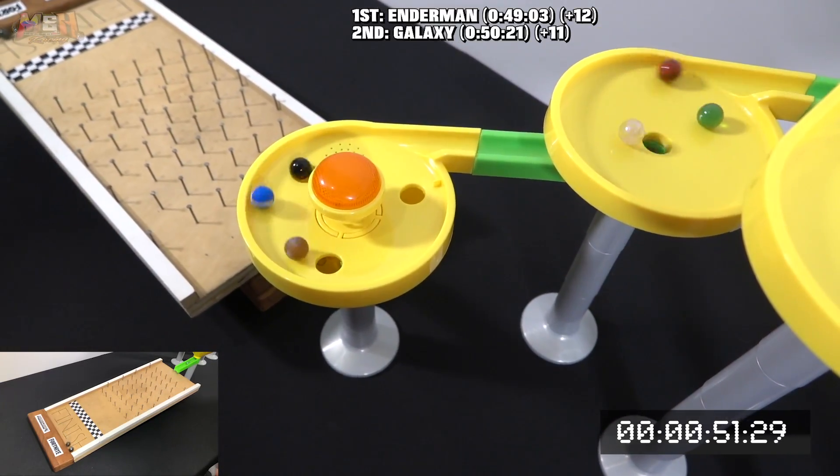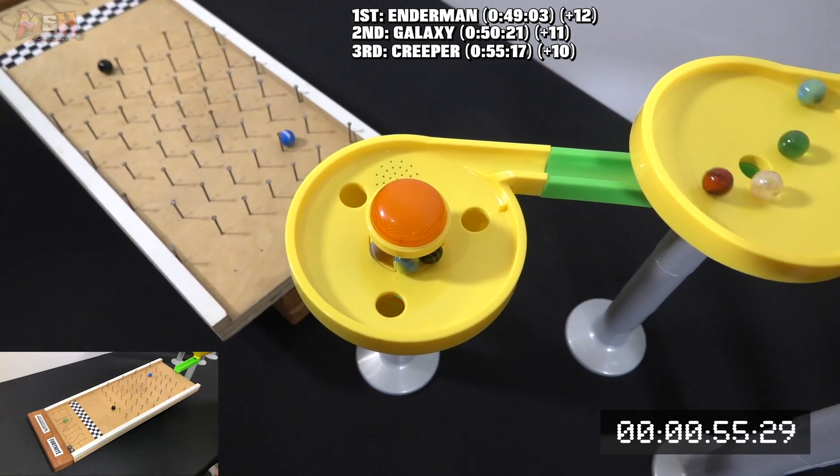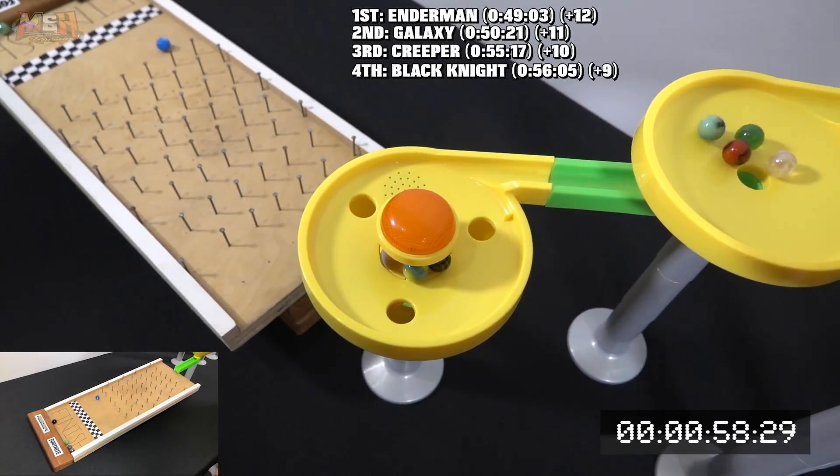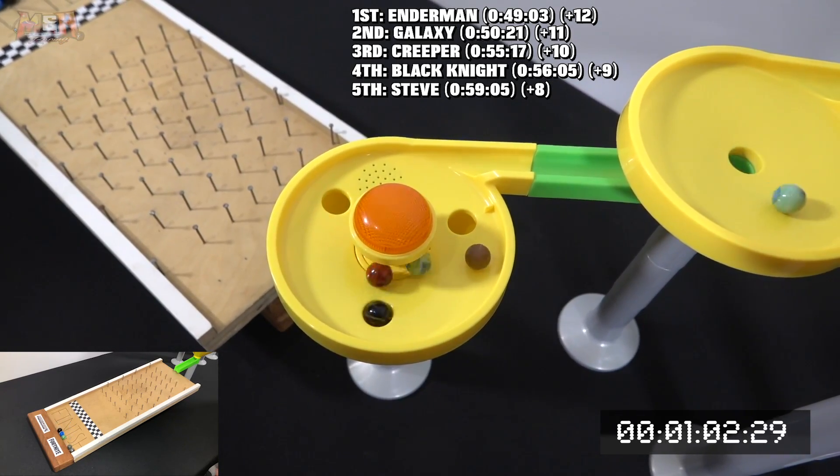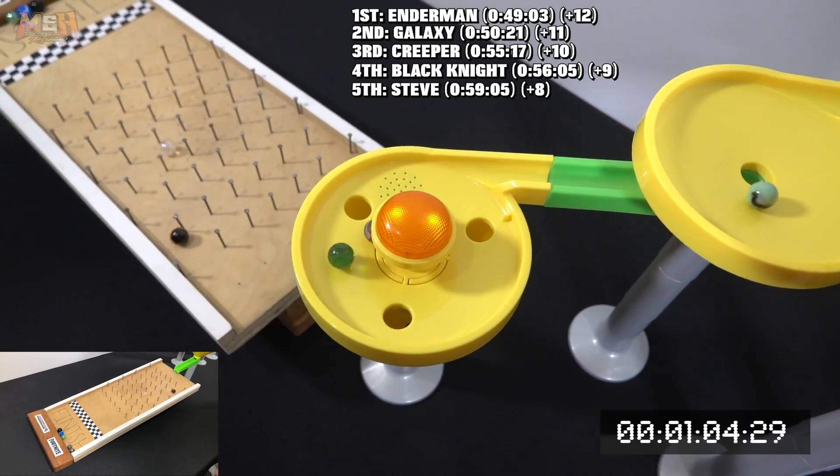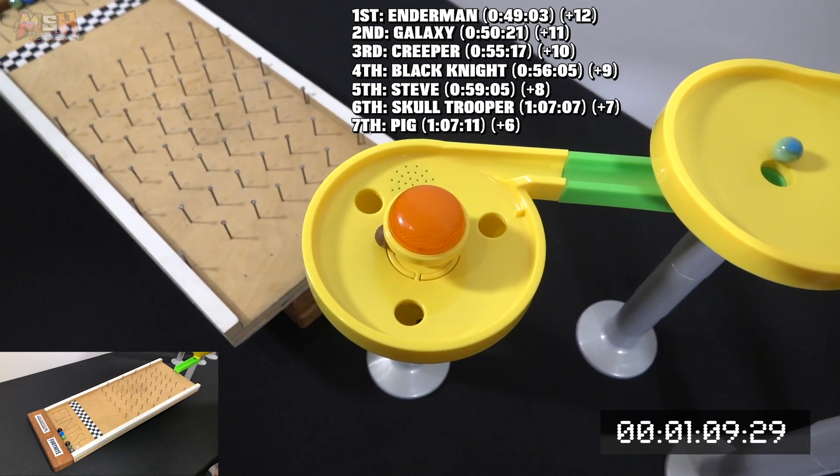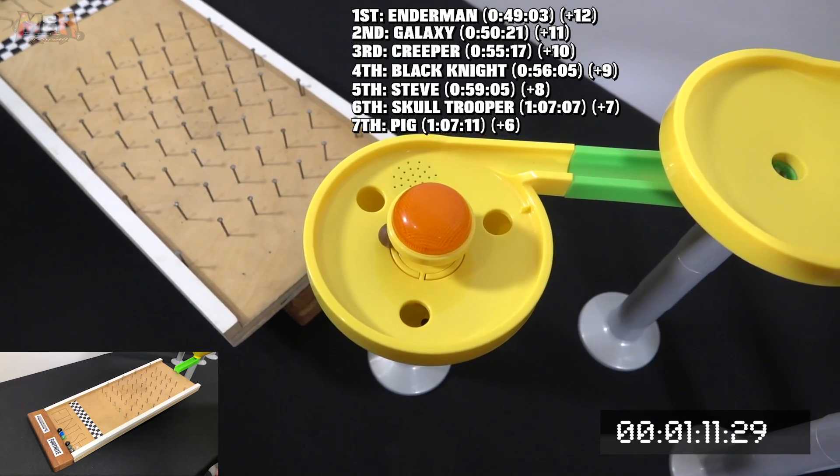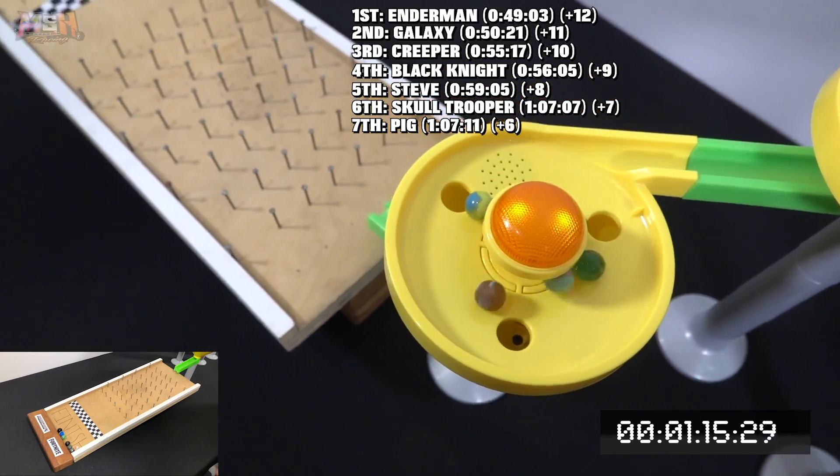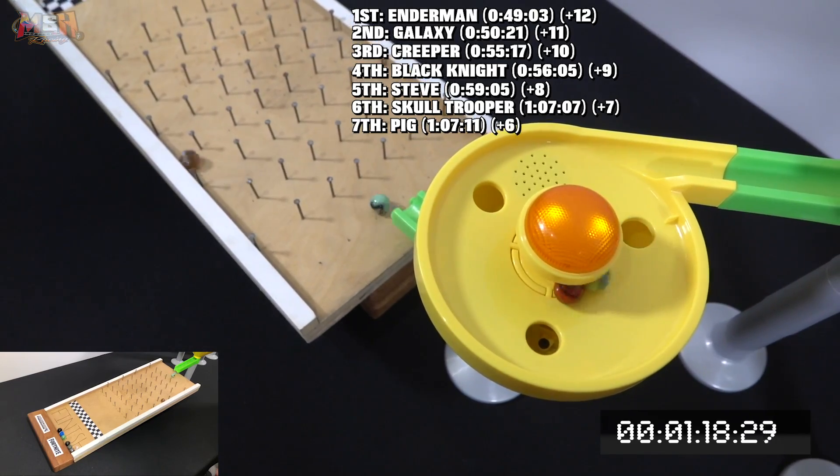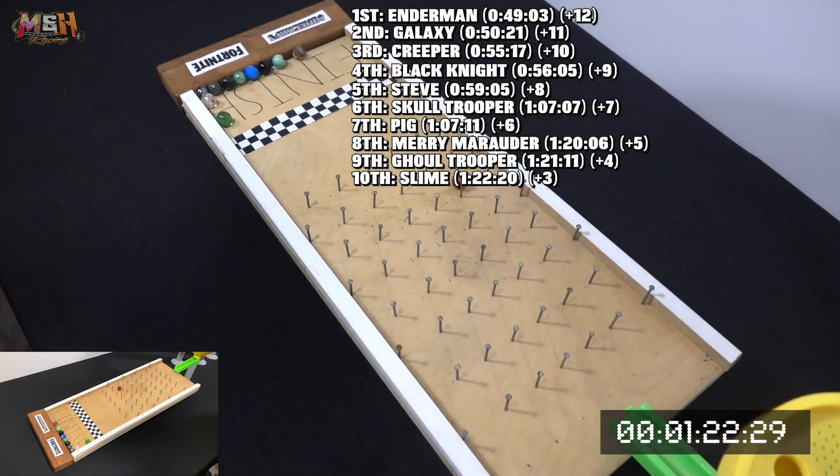He'll be taking first for Minecraft, followed by Galaxy. Creeper now making his way down, placing third, Black Knight fourth, Steve fifth. And what's this? We have a jam up in the pinball dish and it's going crazy. Skull Trooper passes Pig at the last second, getting the additional seven points. And in the pinball dish we once again have another jam up with five marbles.